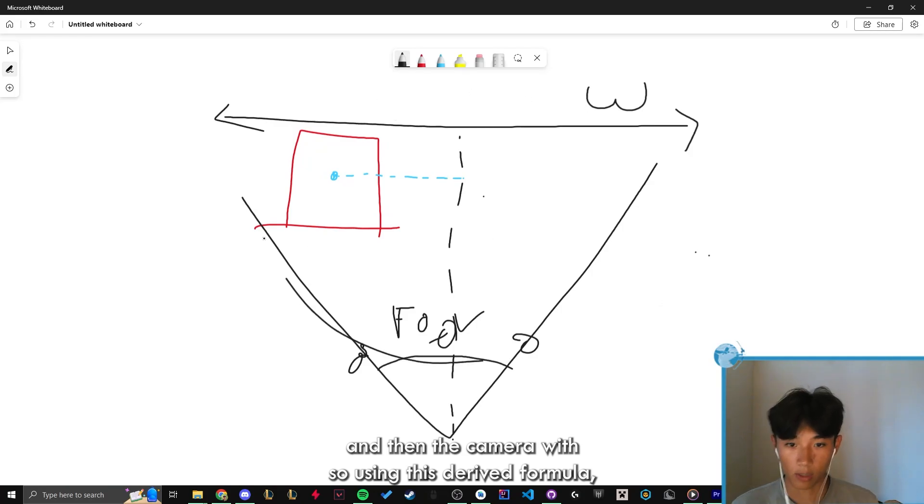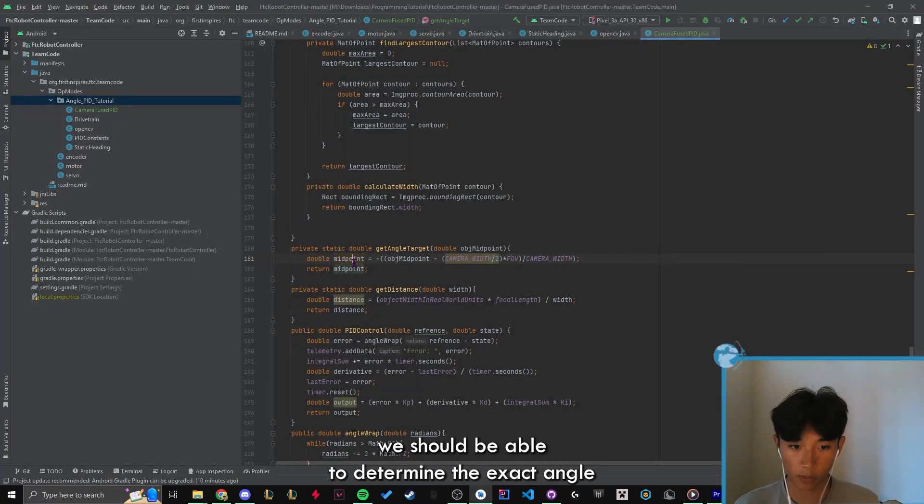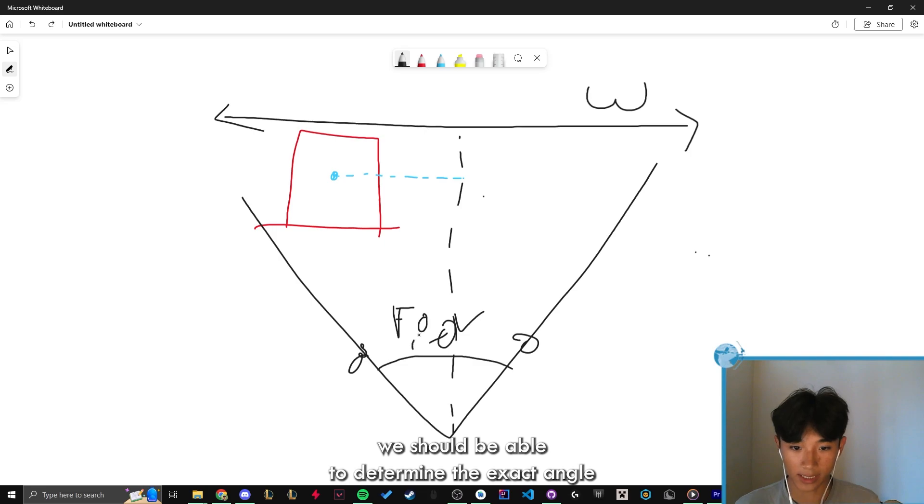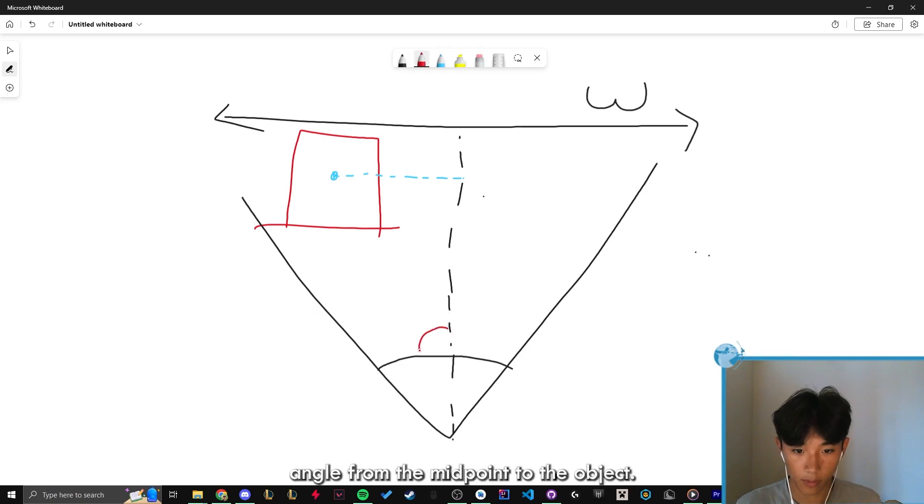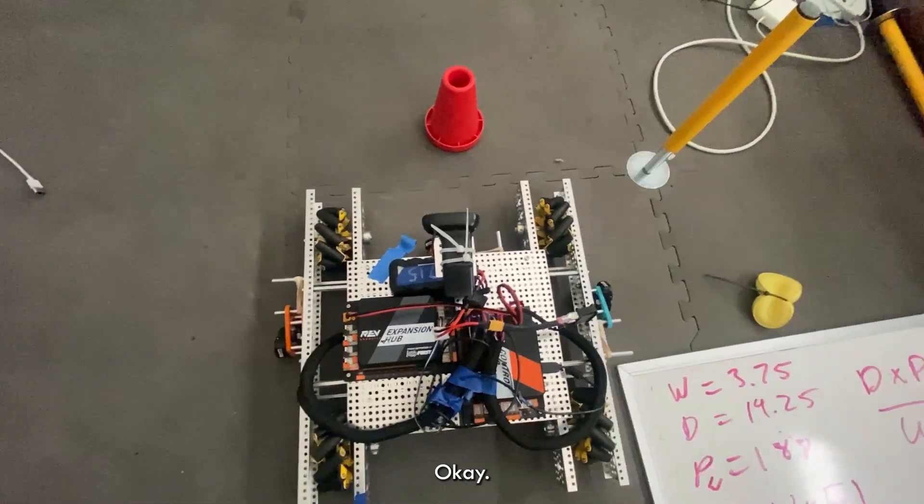So using this derived formula we should be able to determine the exact angle from the midpoint to the object, and that's what we're calculating.